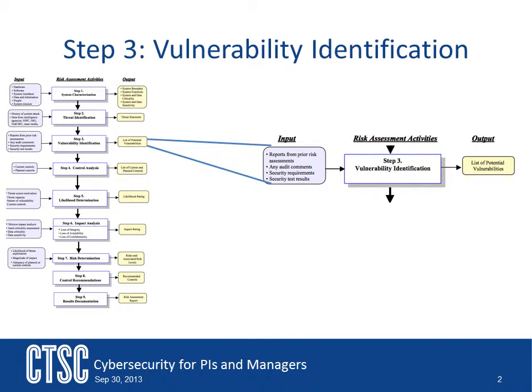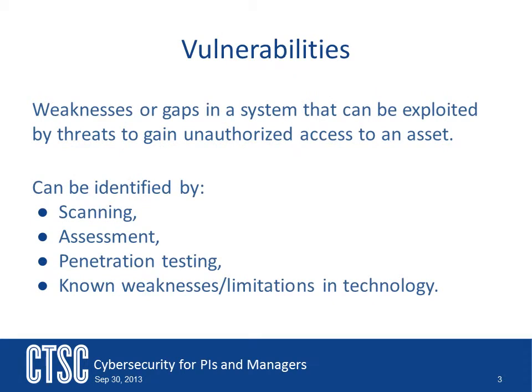The third step is the identification of vulnerabilities within the system. A vulnerability is a weakness or a gap that exists in the system and can be exploited. In the previous tutorial, we talked about threats. This, then, is what the threat would look at using to gain unauthorized access to one of the assets that was identified as part of the system characterization.